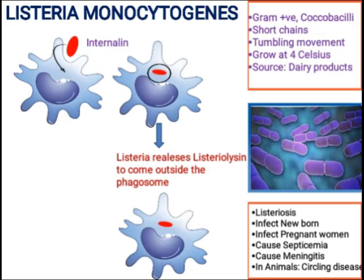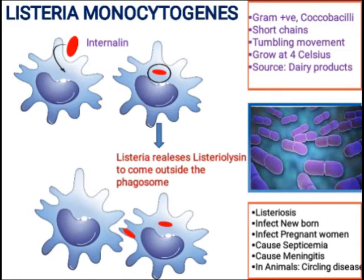Once released, the bacterium is free to move and replicate inside the cell. Listeria monocytogenes develops a tail-like structure using actin, which allows it to move from cell to cell without being exposed to antibodies or the complement system.